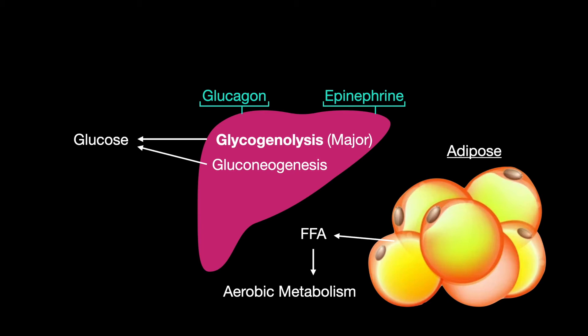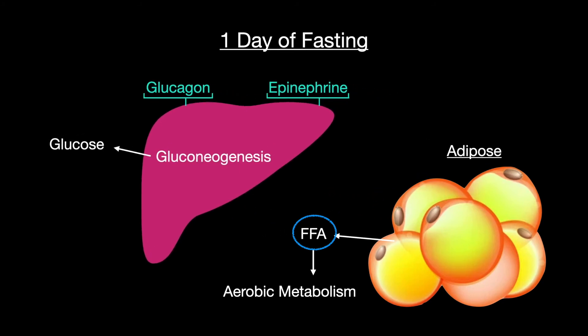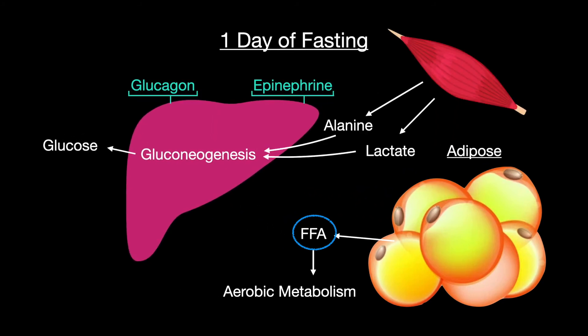One day after not eating anything, your glycogen stores become depleted. Your body then relies on adipose tissue to release free fatty acids for aerobic metabolism. Gluconeogenesis occurs in the liver using lactate, alanine, glycerol, and propionyl-CoA from odd-chain fatty acids instead of glycogen.